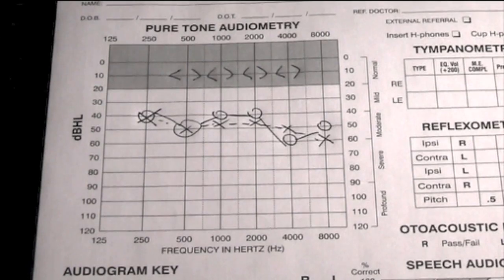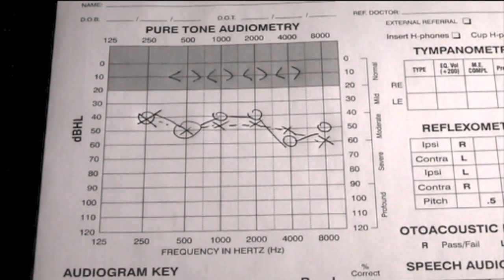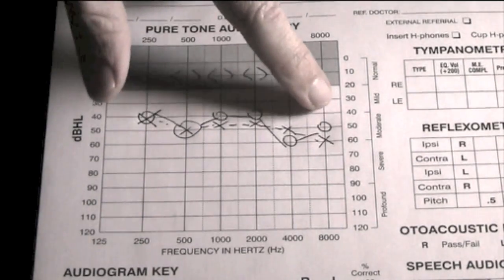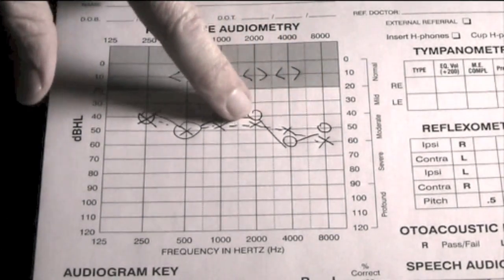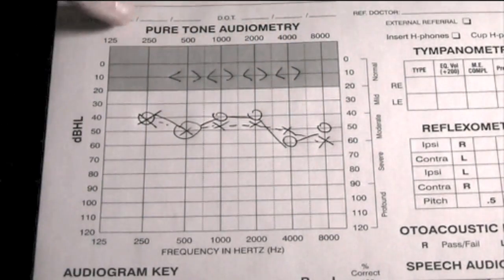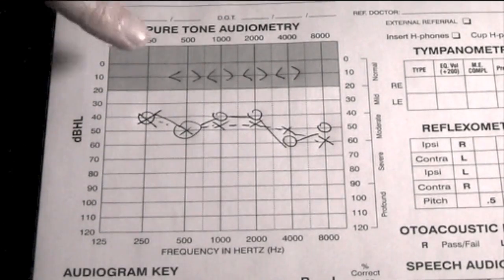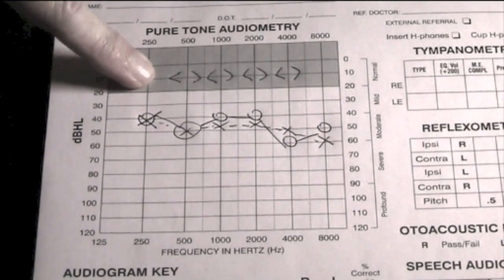This is an audiogram of someone with a conductive hearing loss. There are two important features to show you. The first is we can see the response to sound is down from the normal level, but when I test the inner ear directly, the response from sound is much better.